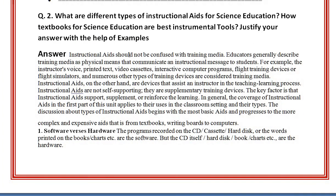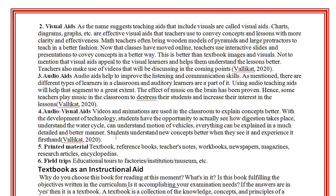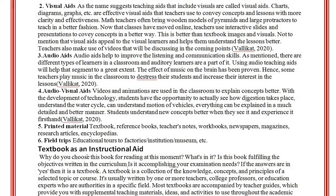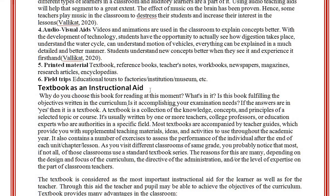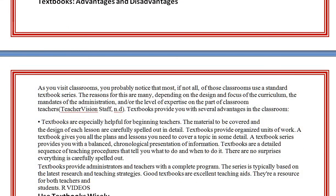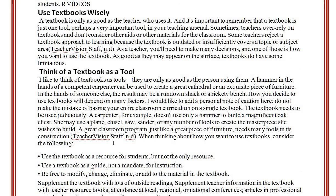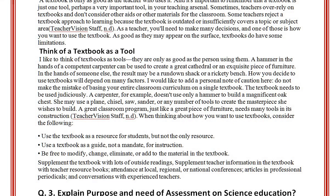First, we told you about instructional aids. Then we asked about different types — software vs. hardware. We are using visual aids, audio aids, audio-visual aids, printed materials, and field types. Then we discussed how you can see the textbook as an instructional aid, including its advantages and disadvantages. This ends question number 2.